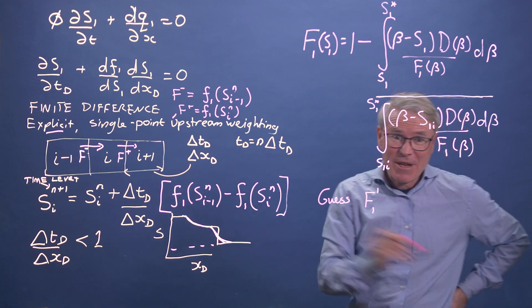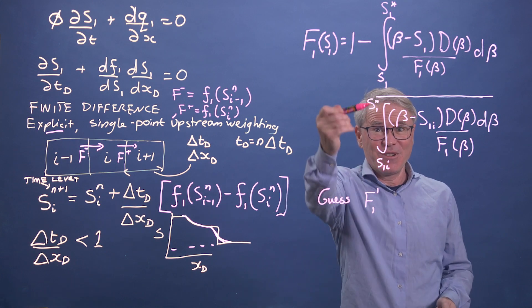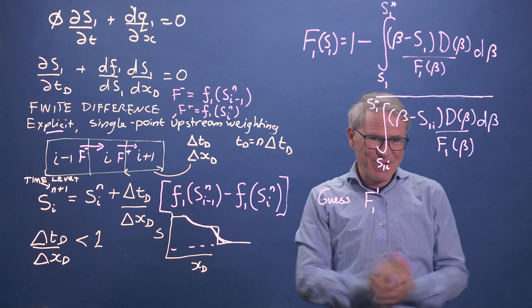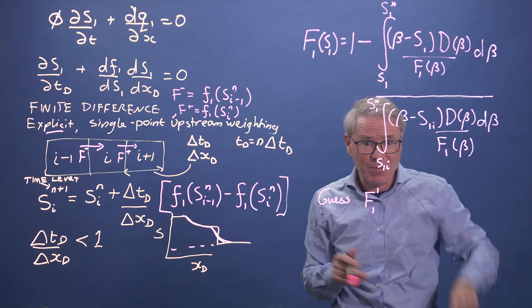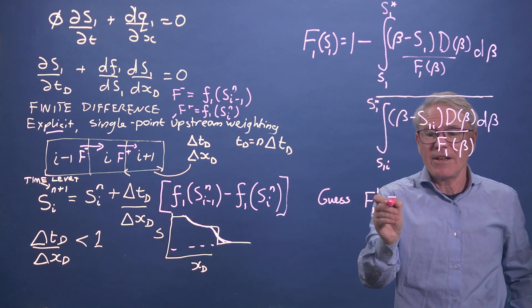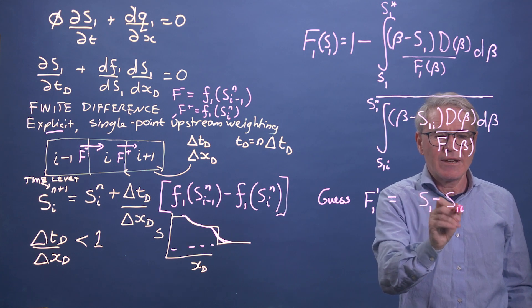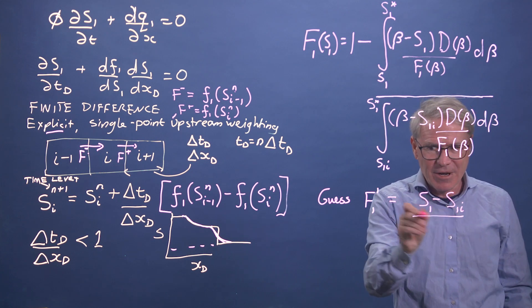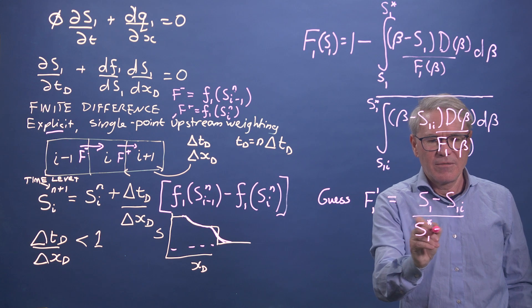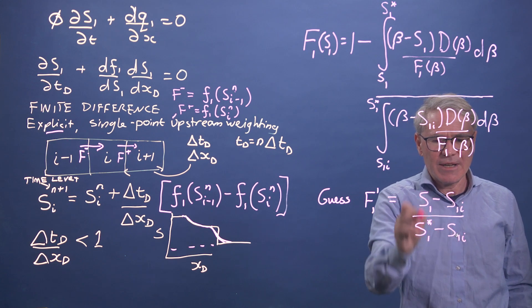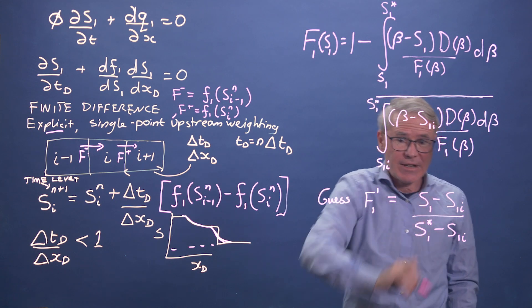So f1, let's say, guess 1. We know it needs to be a function that goes between 0 and 1 as the saturation goes from the initial conditions to s1 star. So why don't we start with a linear function and then it's actually got to get this sort of no-shock shape as you integrate. So it turns out an initial guess that works really very well would be s1 minus s1i, so 0 at the initial conditions. And then s1 star minus s1i, so that when we're at s1 star, that equals 1. So that's your fractional flow as a function of saturation. That's your initial guess.